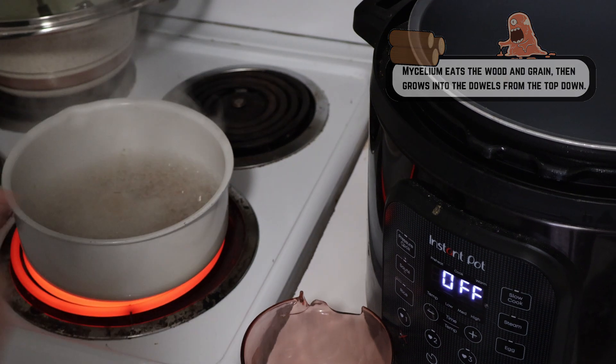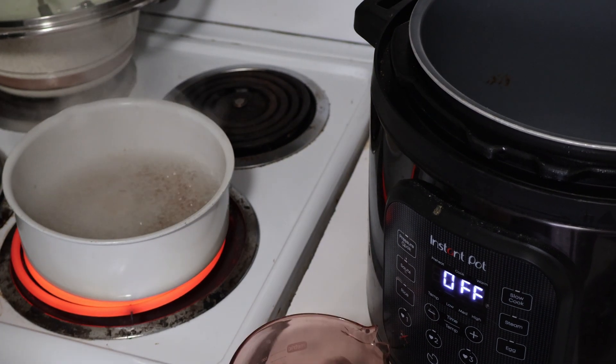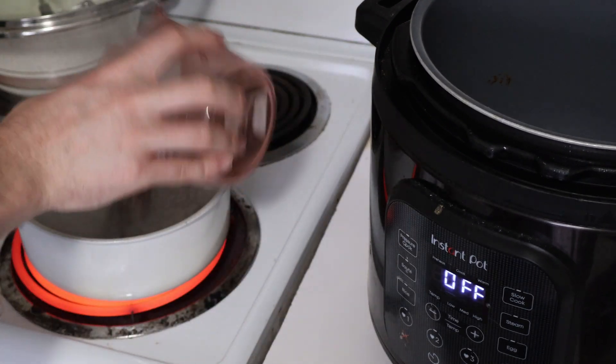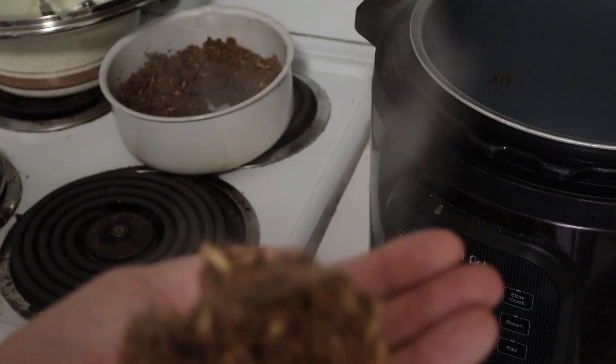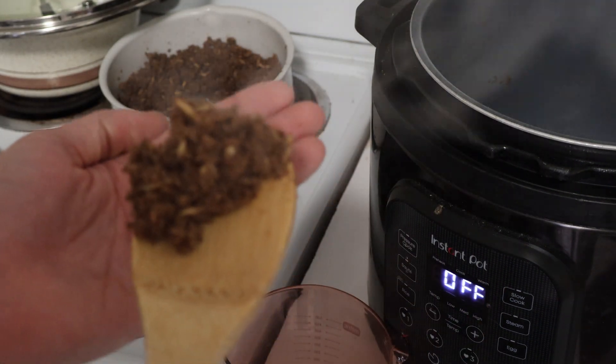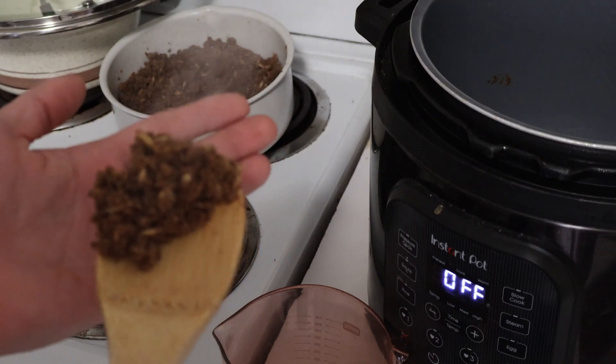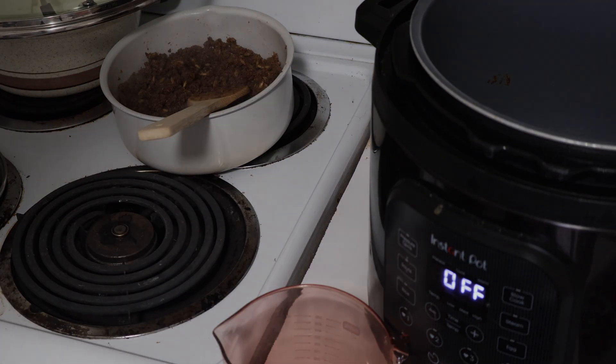And with the oats softened for about 10 minutes, we're going to go ahead and turn off the heat and throw in all these hardwood fuel pellets. Then we can just stir it all up. Doesn't that just look delectable? If I were a mushroom, I'd love that. Let's let it all cool down before we jar it up.